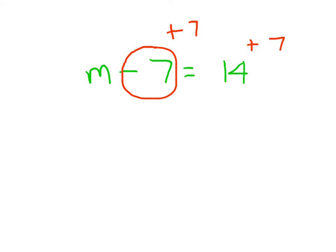So M minus 7 plus 7. So I have some number. I take away 7 from it. But then I add 7 to it. I'm just going to be left with M. 14 plus 7 is 21. So M equals 21. Plugging in 21, does 21 minus 7 equal 14? And the answer to that is yes.